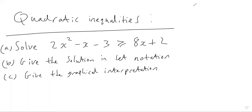Hello, so in today's video we're going to look at quadratic inequalities and we're just going to look at one example. We're going to look at solving this inequality: 2x squared minus x minus 3 is greater than or equal to 8x plus 2. We're going to solve it, give the answer in set notation, and then give a graphical interpretation of this inequality.